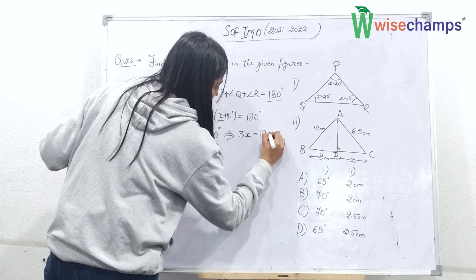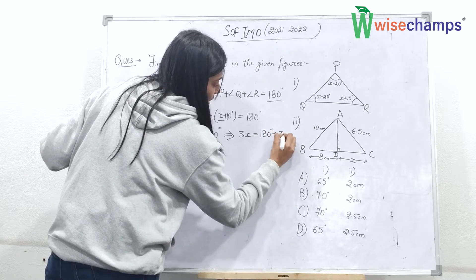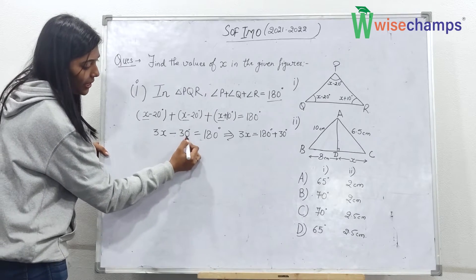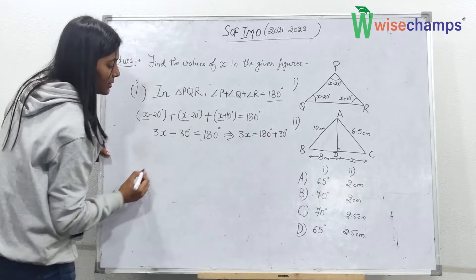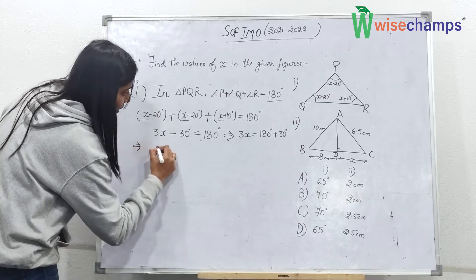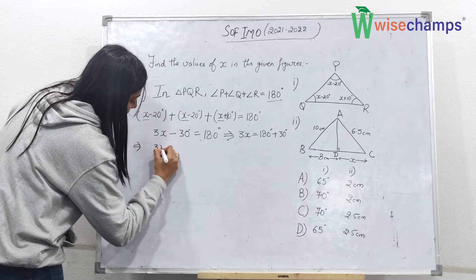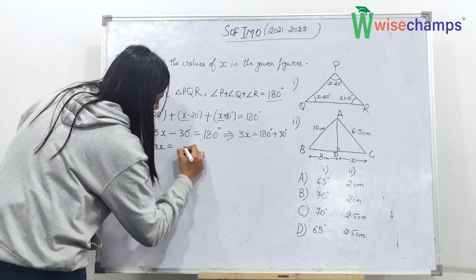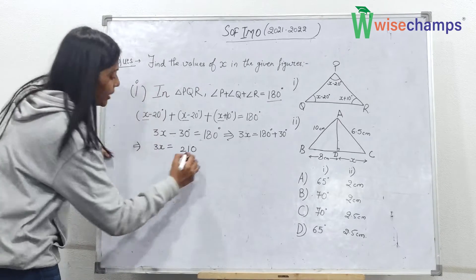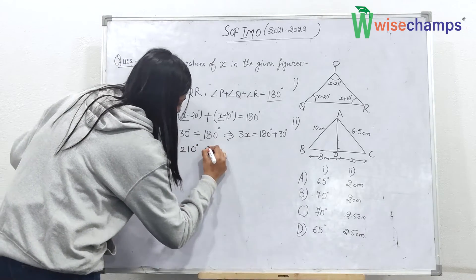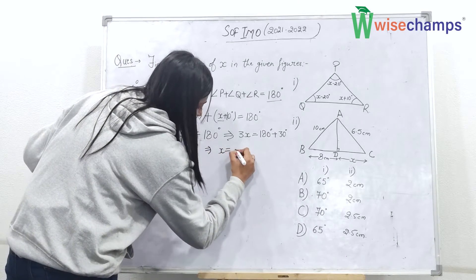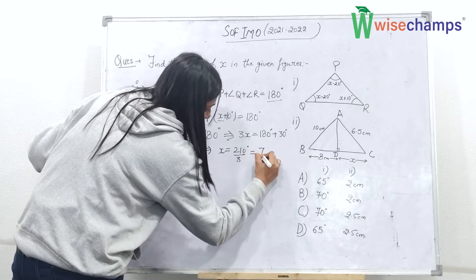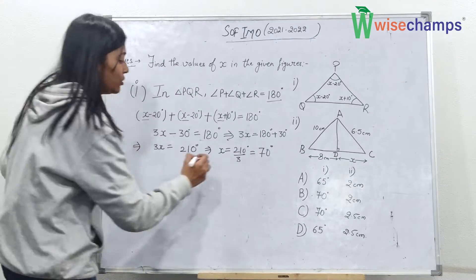So this implies that 3X will be equal to 180 degrees plus 30 degrees. This 30 will go to this side as plus. So here we will get 3X equal to 210, 210 degrees, and X will be equal to 210 divided by 3, which is equal to 70 degrees.